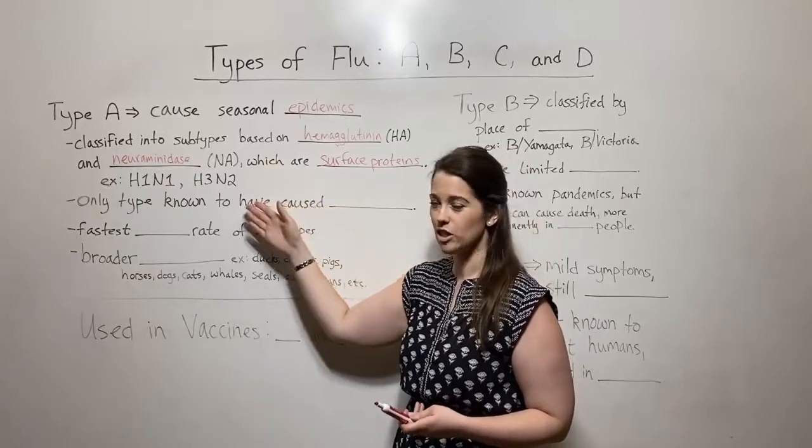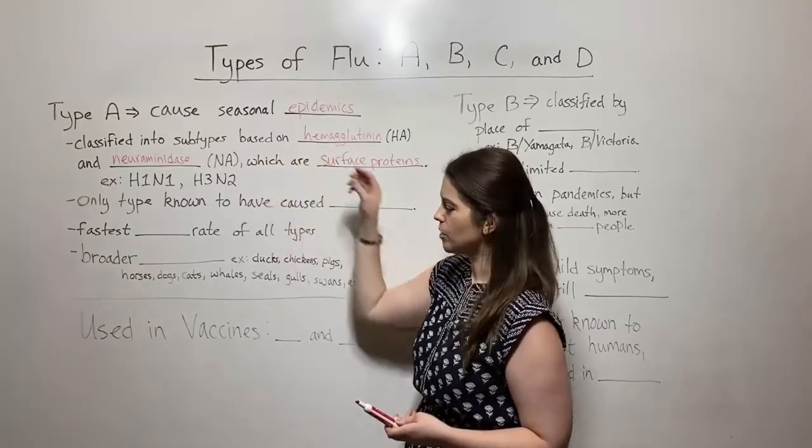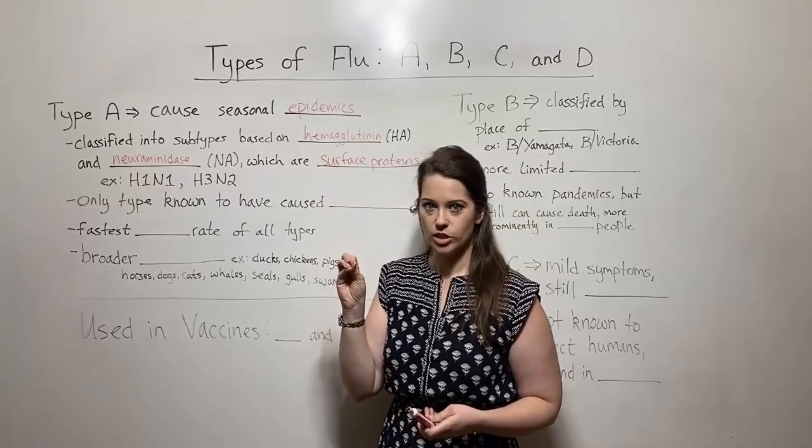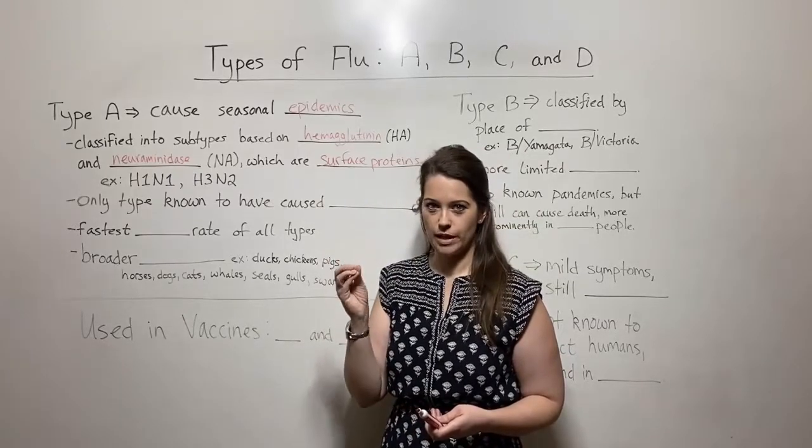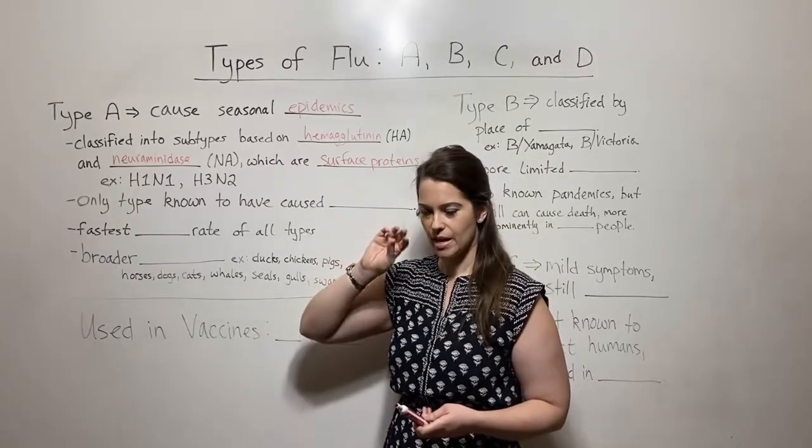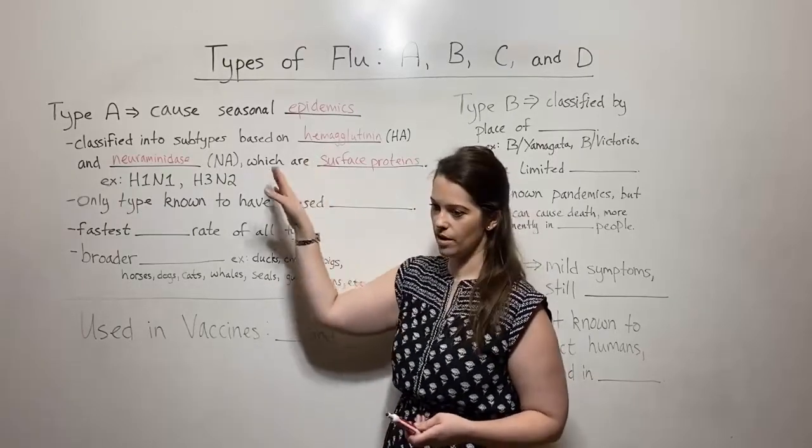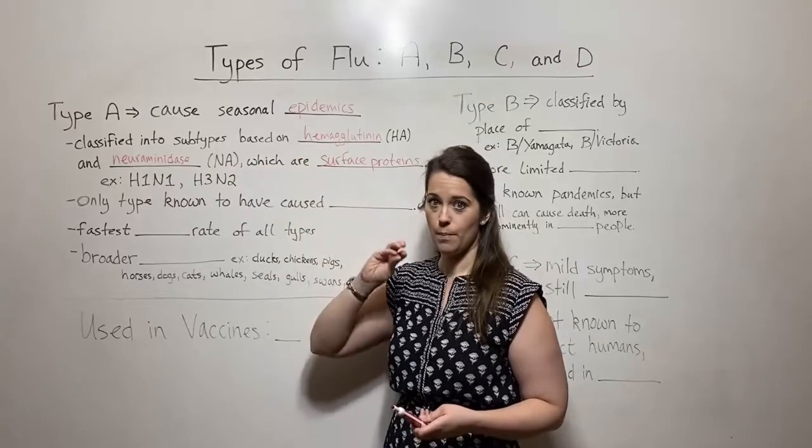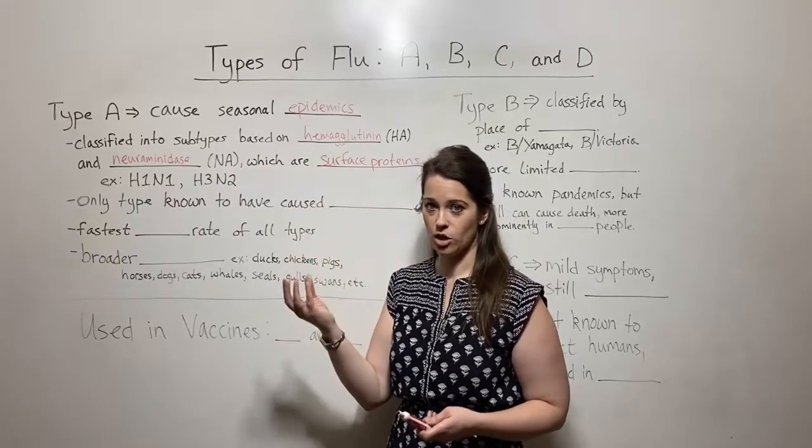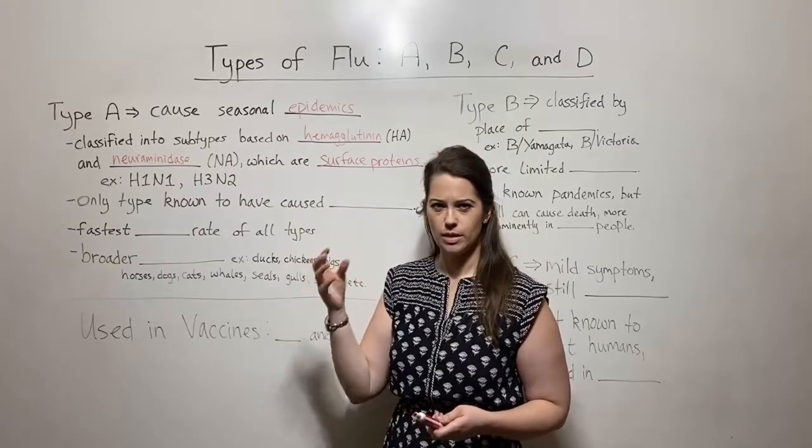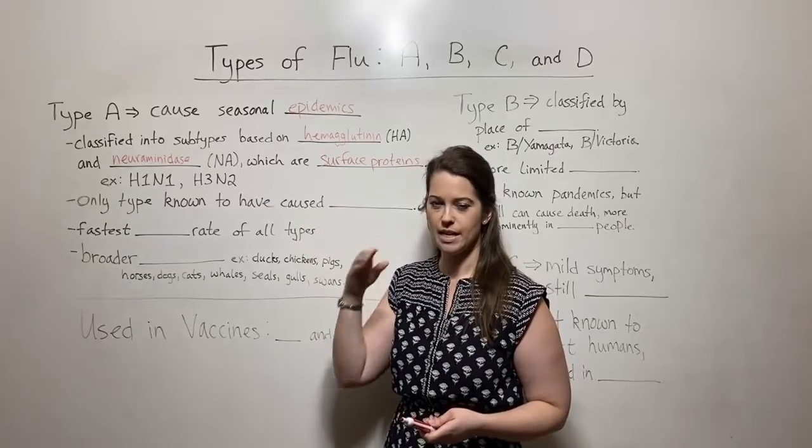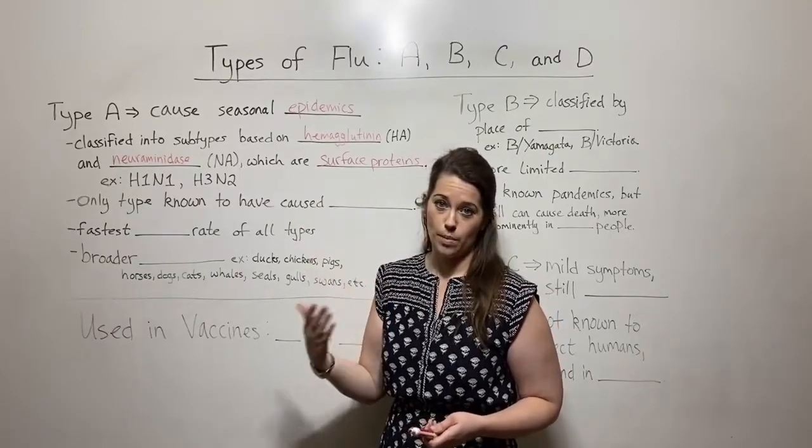Now, what do these surface proteins do, you might be wondering? Hemagglutinin binds to sialic acid, which is something that's on the surface of target cells, so that it can enter those cells when it binds to the sialic acid. When the hemagglutinin on the flu virion binds to the sialic acid on the target cell, that stimulates endocytosis. The target cell brings the flu virus in, and then it can begin its replication cycle in there.